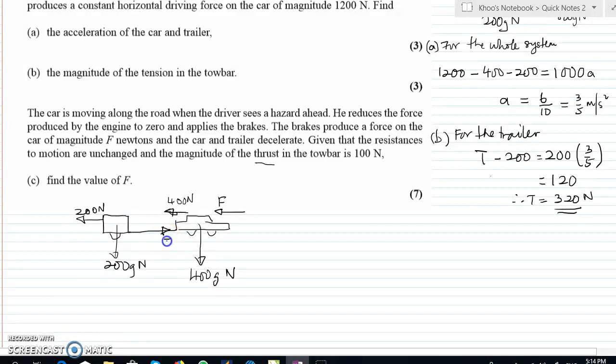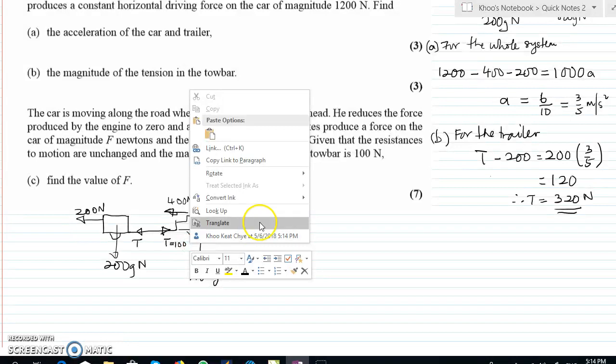So for the car it's this direction. Let's call it T. For the trailer is in this direction again, the same thing. The T in this case is 100 Newton. The important thing is the direction must be correct.